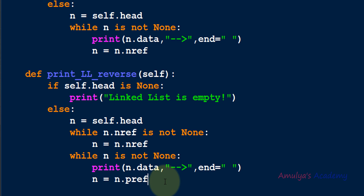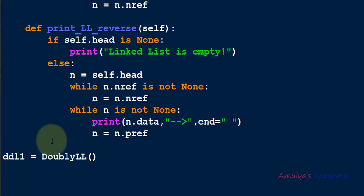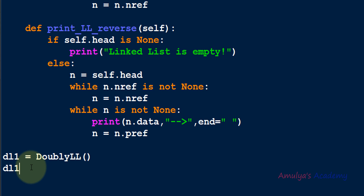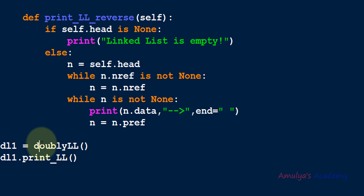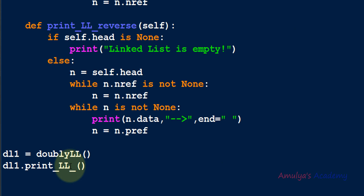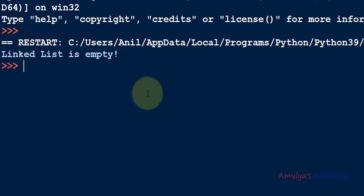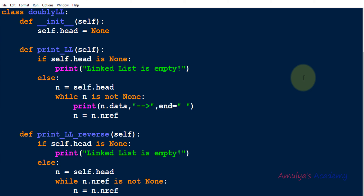Now we are done with both forward traversal and backward traversal. To check whether these methods work properly, we need to add elements first, which requires the insertion operation — we'll see that in the next tutorial. For now we can test with an empty linked list: I create an object dl1 from wll class, call dl1.print_ll(), and we get the message 'linked list is empty'. Similarly calling print_ll_reverse gives 'linked list is empty'. That's it for now; in the next tutorial we'll talk about insertion. Thank you for watching, don't forget to subscribe.